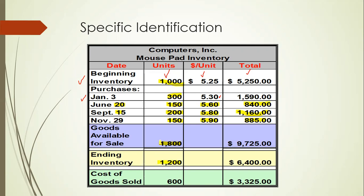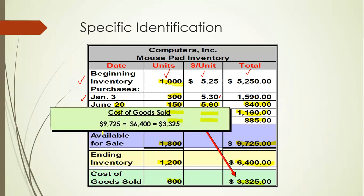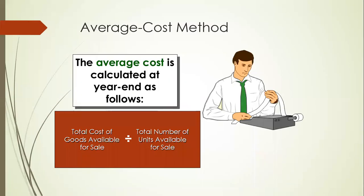You have 1,200 units in ending inventory. The cost of goods available for sale represents all inventory ready for sale, totaling 1,800 units. At year end, the ending inventory is valued at $1,200 in units. That means 600 units were sold. The cost of goods sold is calculated as cost of goods available for sale minus ending inventory: $9,725 minus $6,400 equals $3,325.